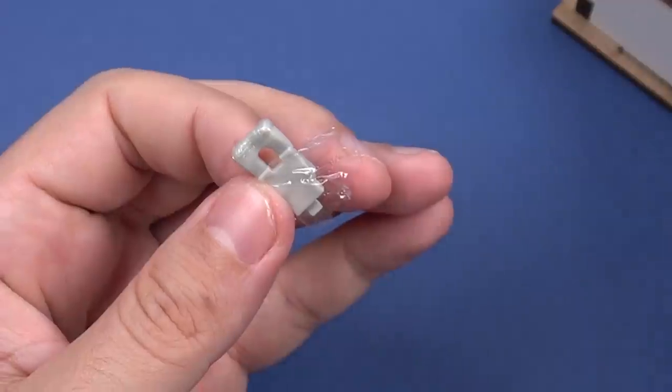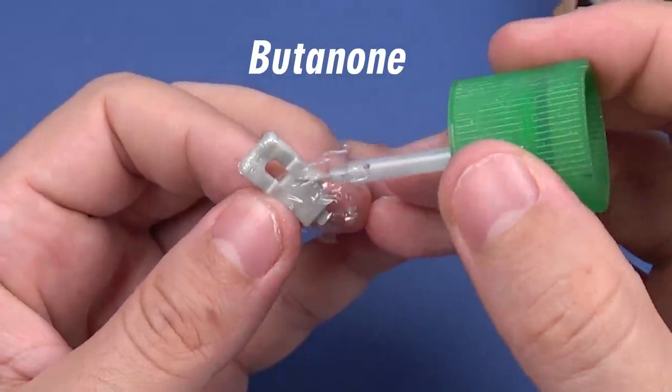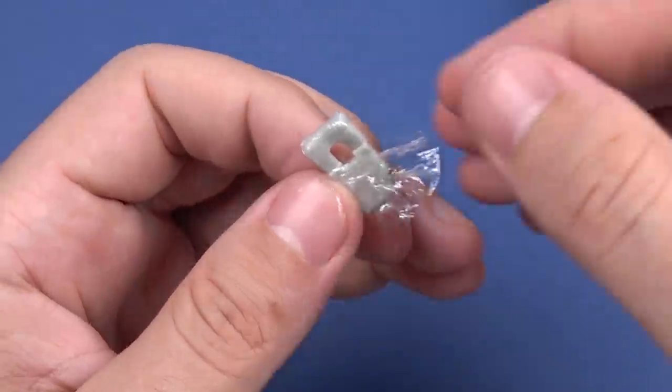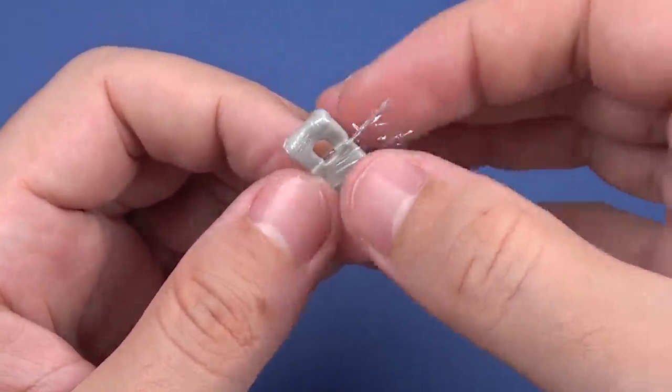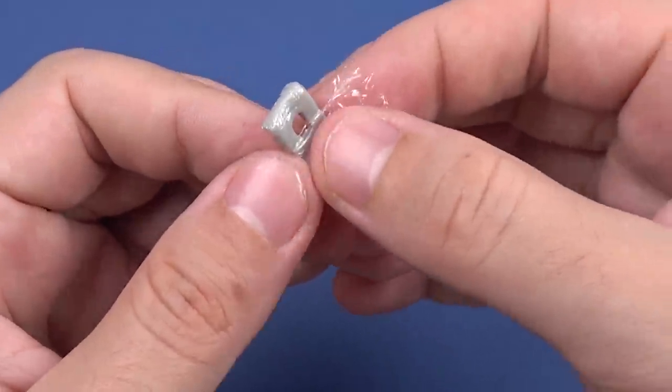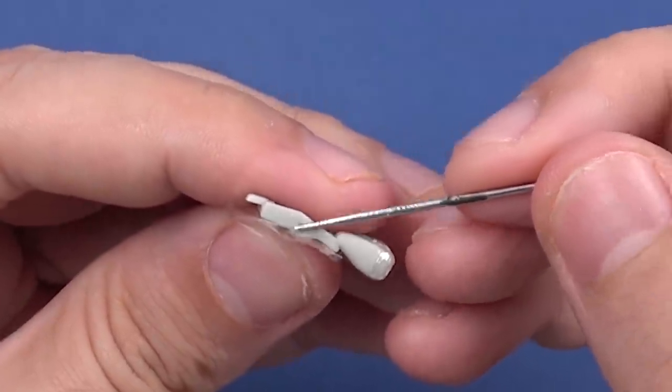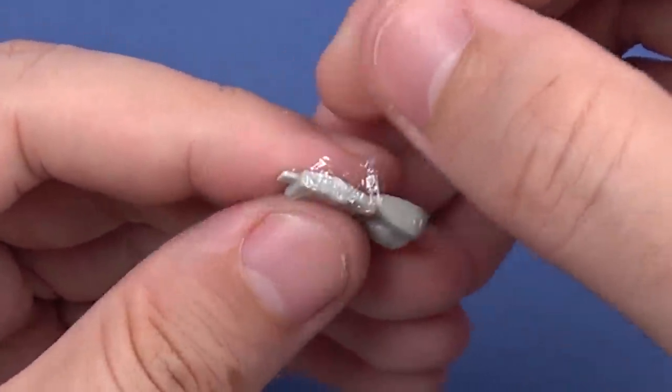This time I'm using a liquid glue, it's butanone. And I glue all the edges step by step with CA glue.